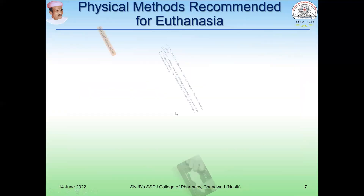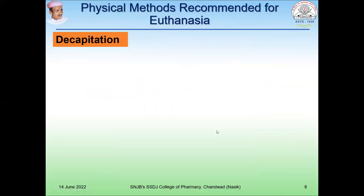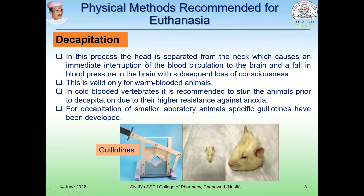The next method is cervical dislocation. It is a simple method and commonly performed in most laboratories with small animals. It destroys the brain stem, but the large vessels to the brain are often intact. As shown in the figure, with the fingertip you hold the neck and with another hand push the tail toward your side, disconnecting the cervical connectivity of the sympathetic and parasympathetic nervous system.